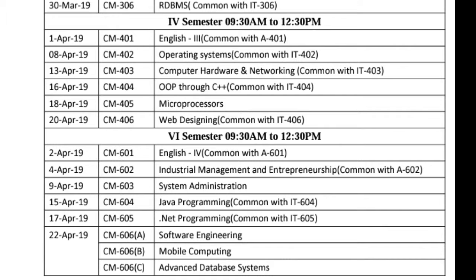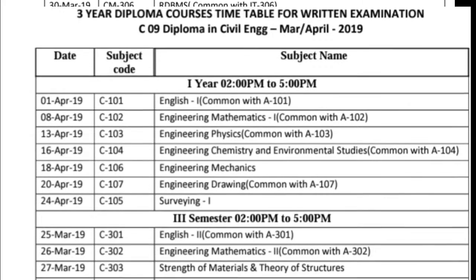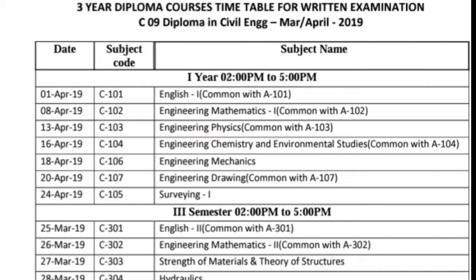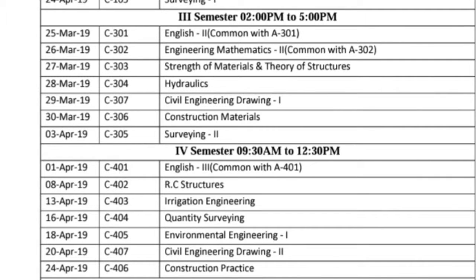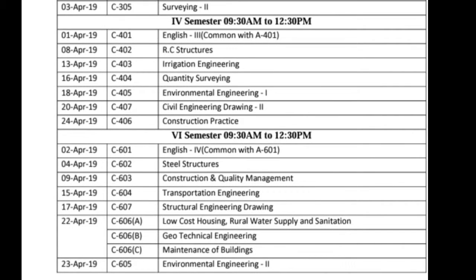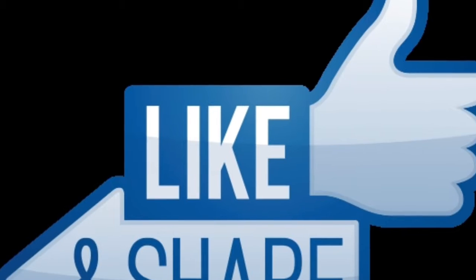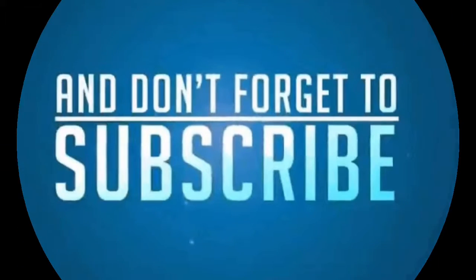Next: fourth semester and sixth semester. Next branch is diploma in Civil Engineering — date, subject code, subject name — third semester, fourth semester, fifth semester, and sixth semester. Thank you.